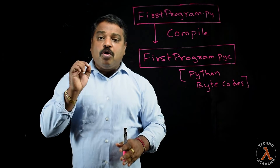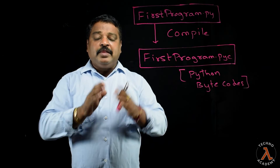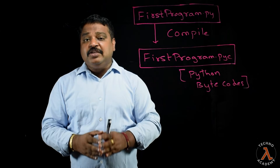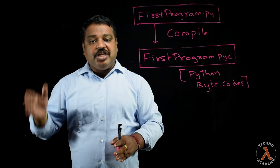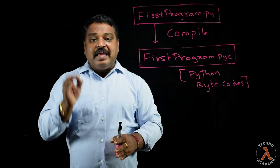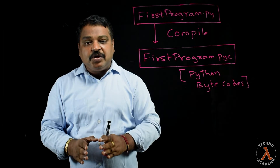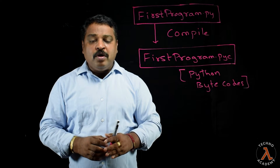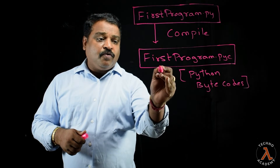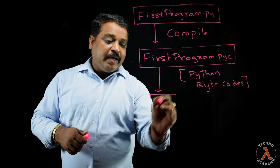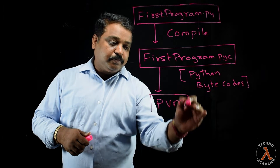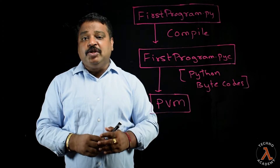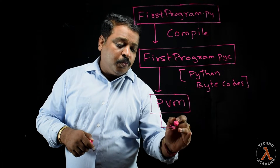No operating system can understand Python bytecodes directly. Just like Java programs need a JVM and .NET uses a CLR to execute C# programs, in order to execute Python code we take the support of the Python Virtual Machine (PVM). Once the Python bytecodes are passed to the Python Virtual Machine, we get the output.